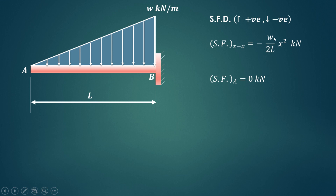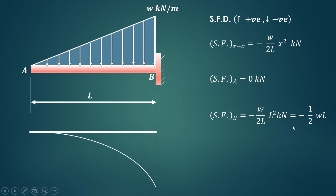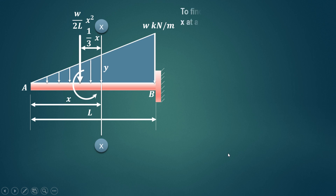At point A, x equals 0, so shear force at A equals 0. At point B, x equals L, so substituting L: shear force at B equals minus one-half times W times L, giving minus WL/2. We can now draw the shear force diagram — at A it is 0 and at B it is minus WL/2. Since this is a second-degree equation, it is a parabolic curve.